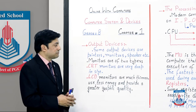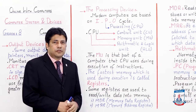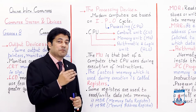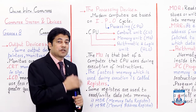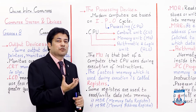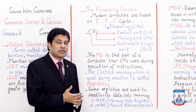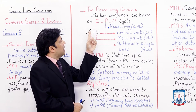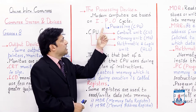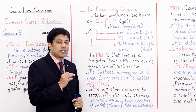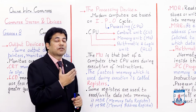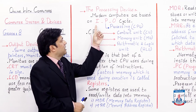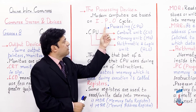So students, now we have input and output devices. Now we have the processing unit. Modern computers are based on the IPO cycle. I stands for Input, O stands for Output, and P stands for Processing.